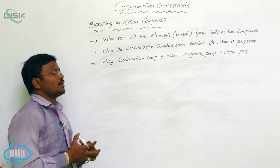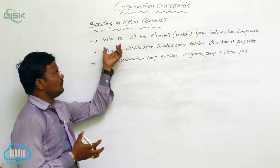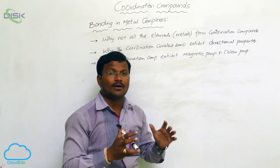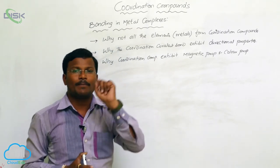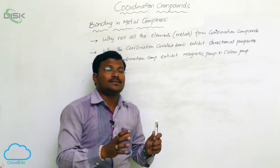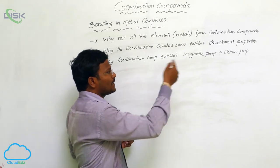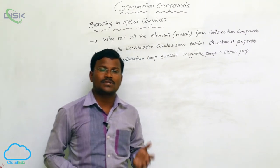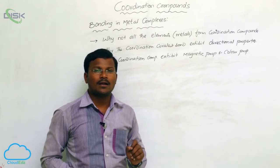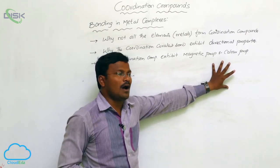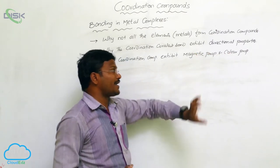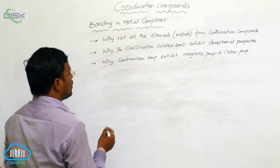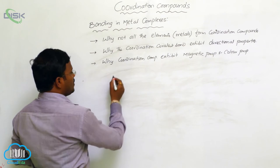The limitations are: first, why not all metals can form a coordination covalent bond; second, why the coordination covalent bond present between a metal atom and ligand has a directional property; and third, Werner's theory does not explain magnetic property and color property of coordination compounds. Many coordination complexes exhibit either paramagnetic or diamagnetic behavior, and a wide variety of colors are exhibited by coordination complexes — factors never explained by this theory.